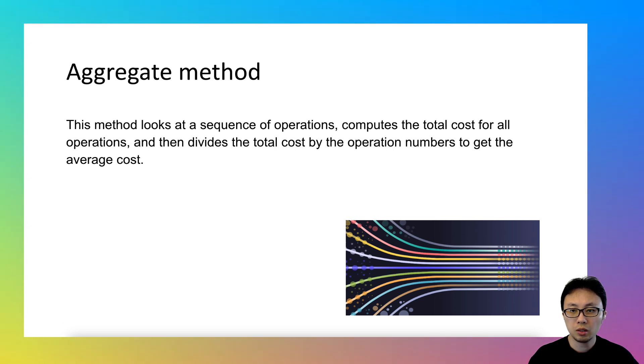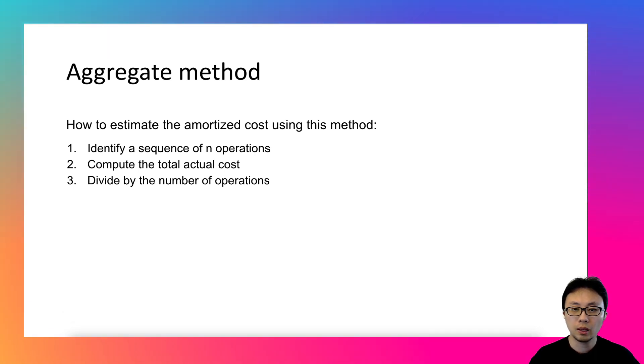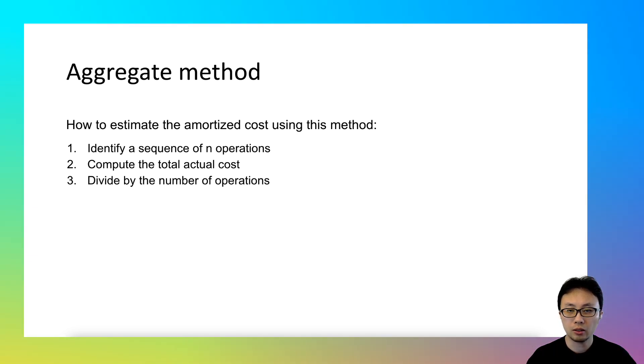Translating this description to steps, you will have a guideline of how to use the aggregate method to estimate the amortized cost. The first step is to identify or consider a sequence of n operations on a data structure.